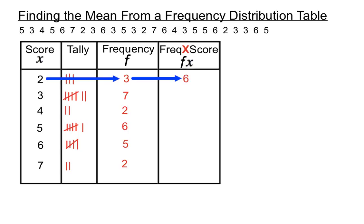All it is is 2 times 3 is 6, 3 times 7 is 21, 4 times 2 is 8, and all we're doing is multiplying the score each time by how many times it occurs. 5 scores of 6, sorry, 6 scores of 5 in this case is 30.